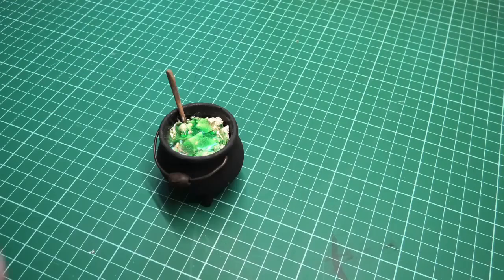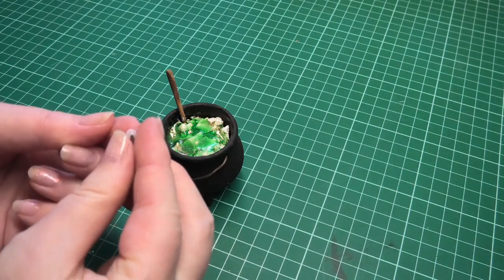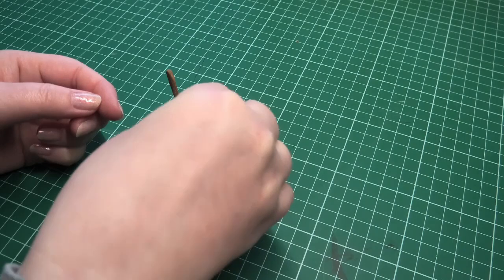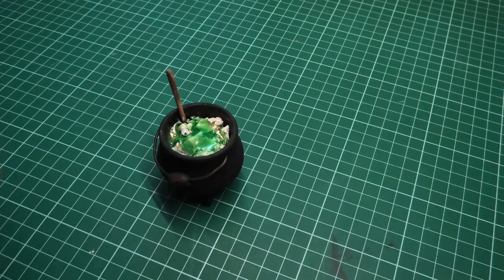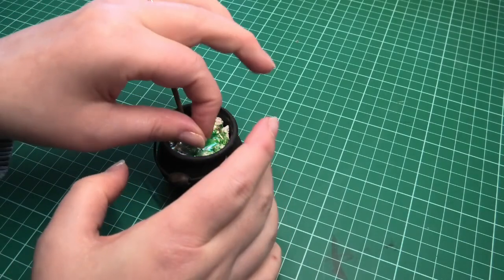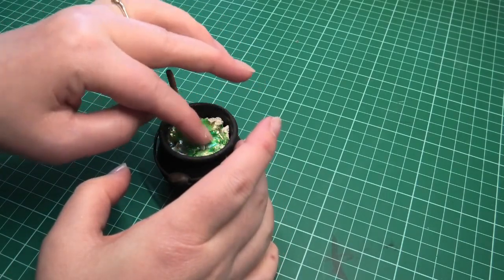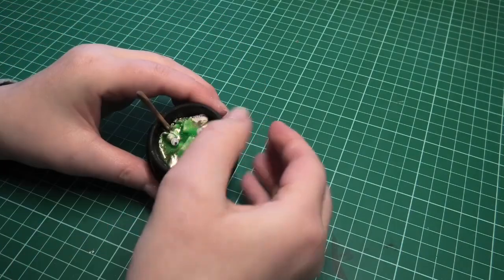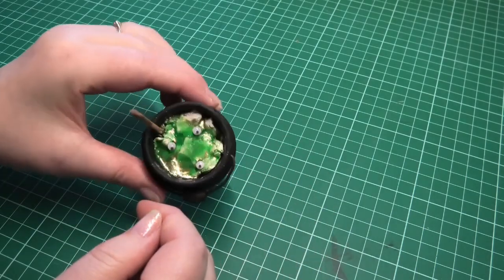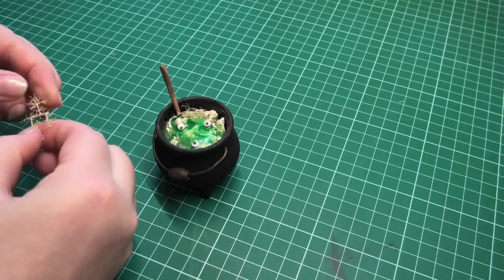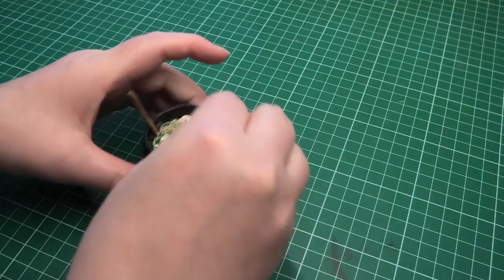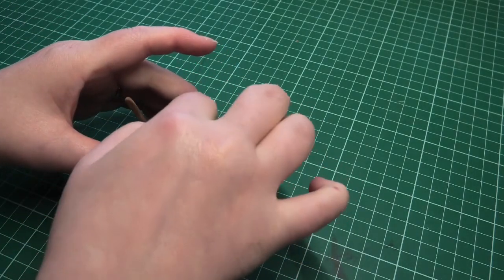Next I added some tiny googly eyes to my magic potion. These ended up getting mostly covered up in the end, but I still think it's a fun little detail. I also added some little bits of dried mossy stuff before adding some more resin.